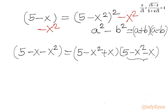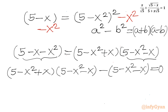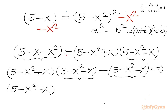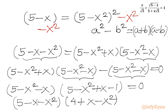Now you can see this bracket and the left-hand side are the same. Taking all terms to one side: 5 minus x squared plus x, times 5 minus x squared minus x, minus 5 minus x squared minus x, equal to 0. Taking the common bracket 5 minus x squared minus x out: 5 minus x squared minus x times 5 minus x squared plus x minus 1 equals 0. Simplifying, 5 minus 1 is 4, so: 5 minus x minus x squared, times 4 plus x minus x squared, equal to 0.